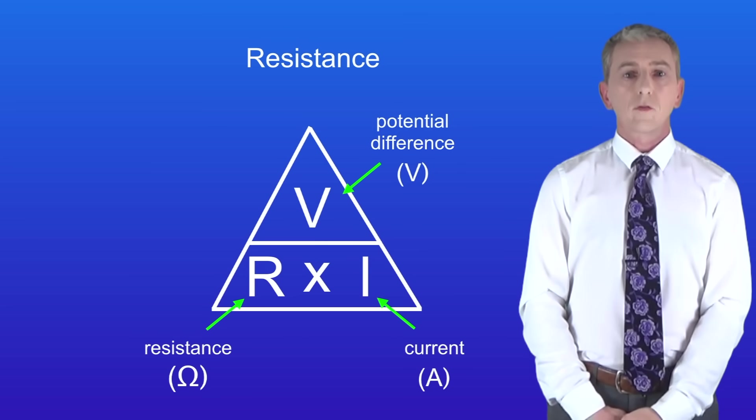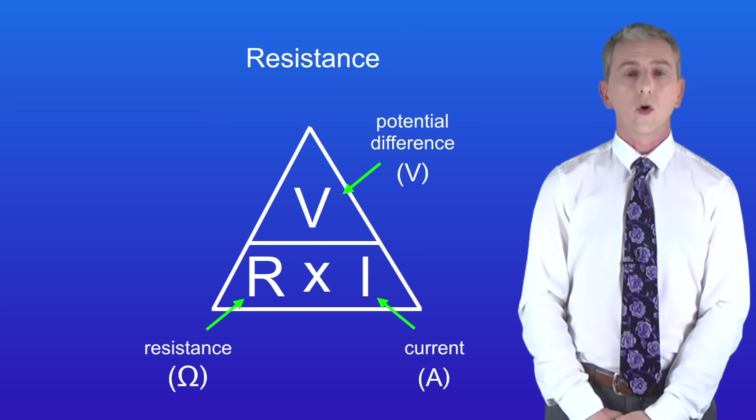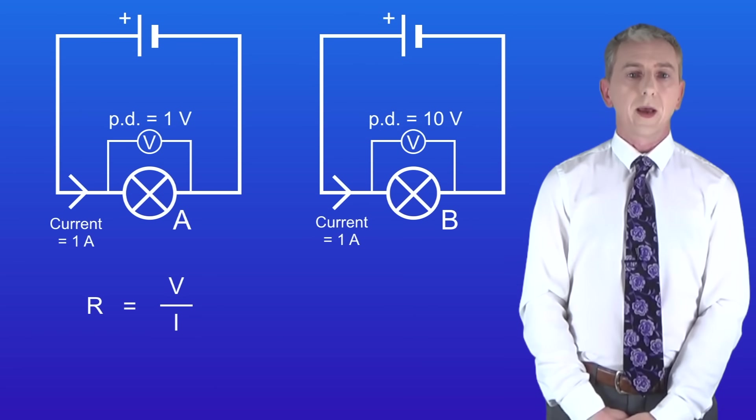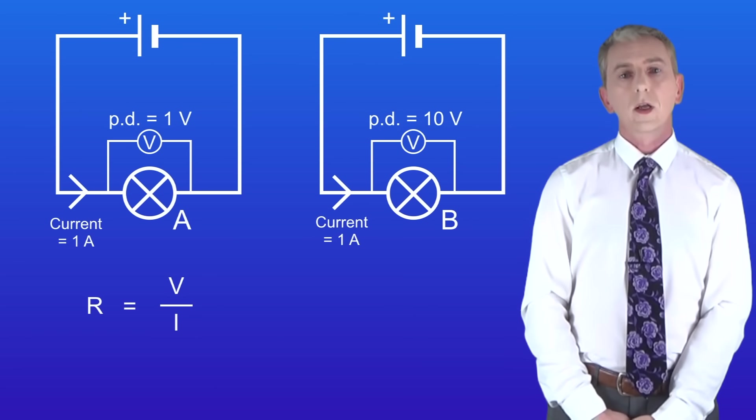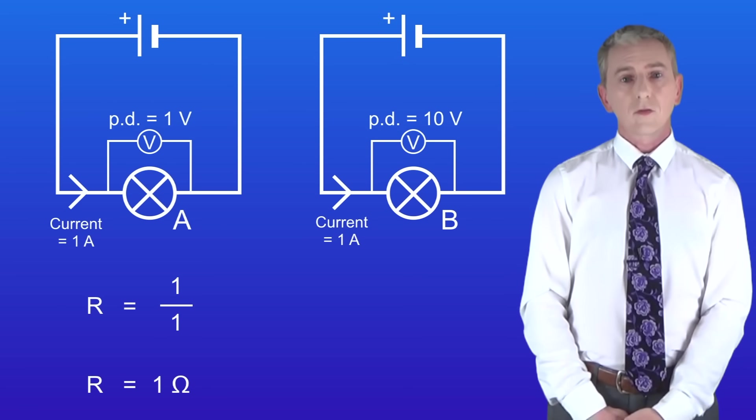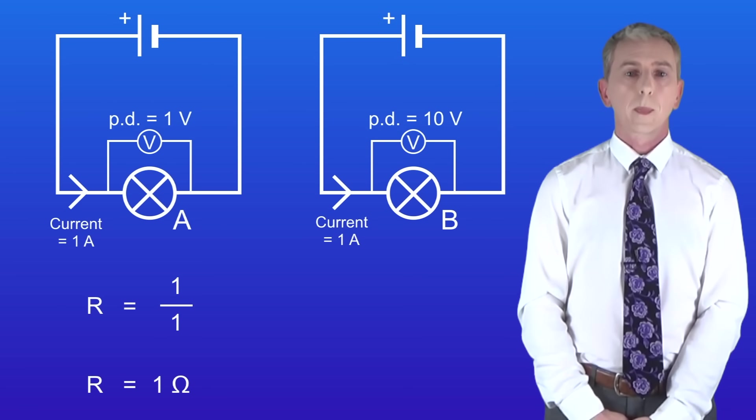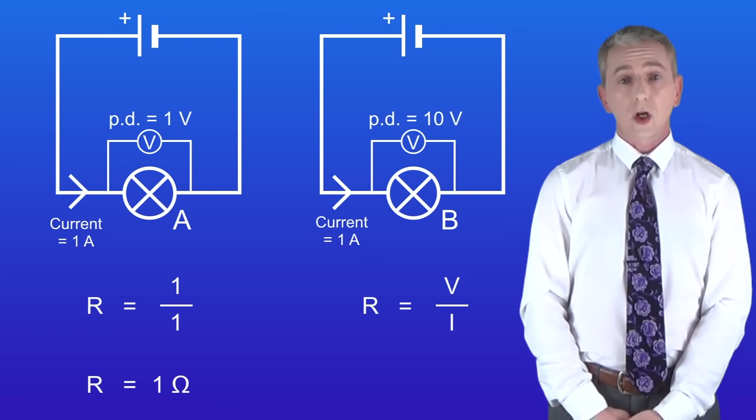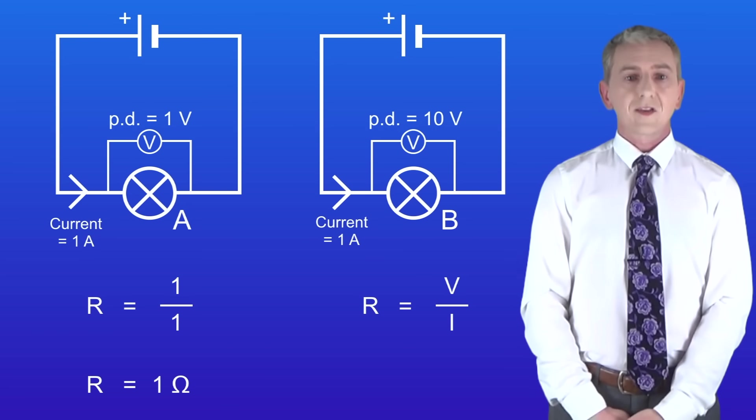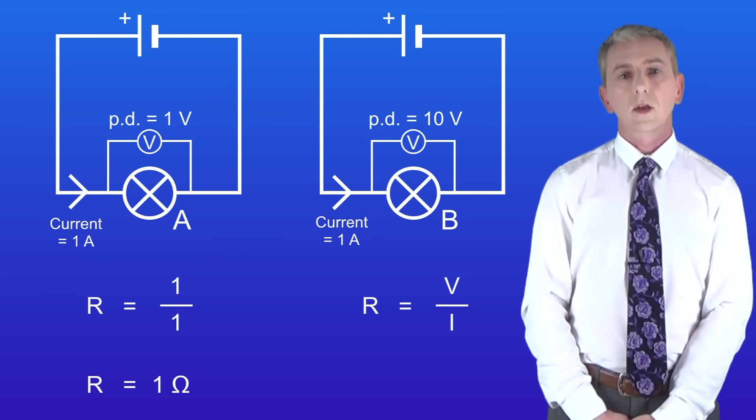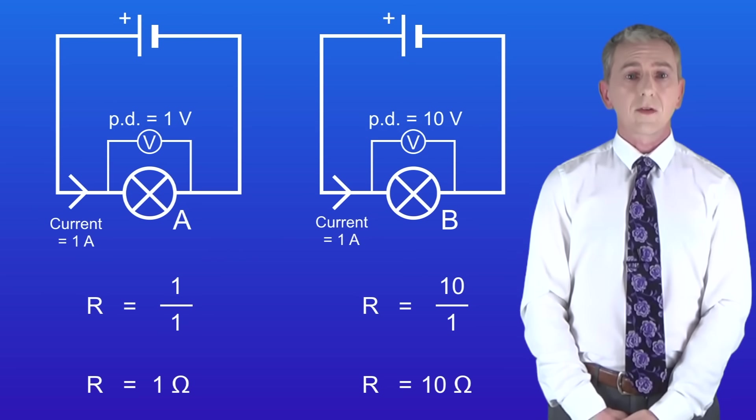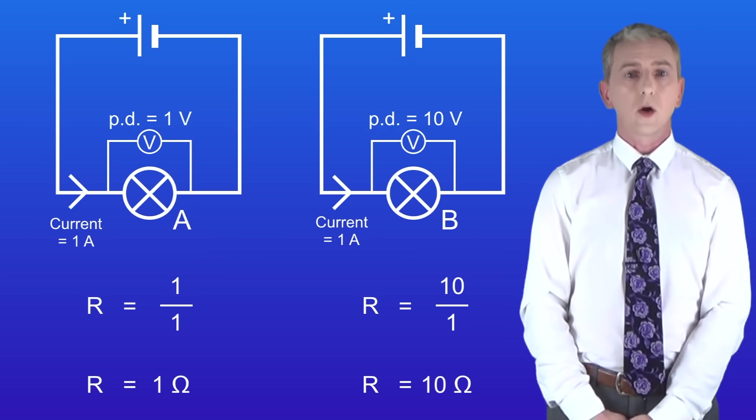So we're going to work out the resistance of the two lamps that we saw before. Lamp A has a current of 1 ampere and a potential difference of 1 volt. Putting these into the equation gives a resistance of 1 ohm. Lamp B also has a current of 1 ampere but has a potential difference of 10 volts. Putting these numbers into the equation gives us a resistance for lamp B of 10 ohms.